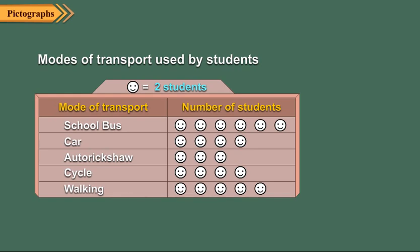Obviously, it is more attractive to look at than a table. From this pictograph, we can calculate the number of students using different modes of transport. Each symbol represents two students.